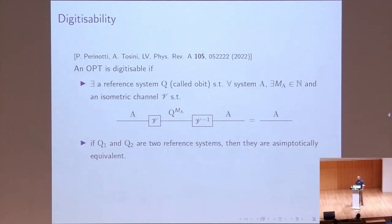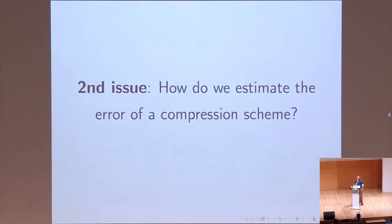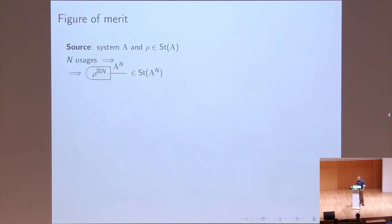Now that we have defined the class of theories in which we define the information content, we have another problem: how do we generalize the entanglement fidelity from quantum theory? In doing this, we have to say how we model the output of a source. A source in a digitizable OPT is described by a system A and a state on that system.